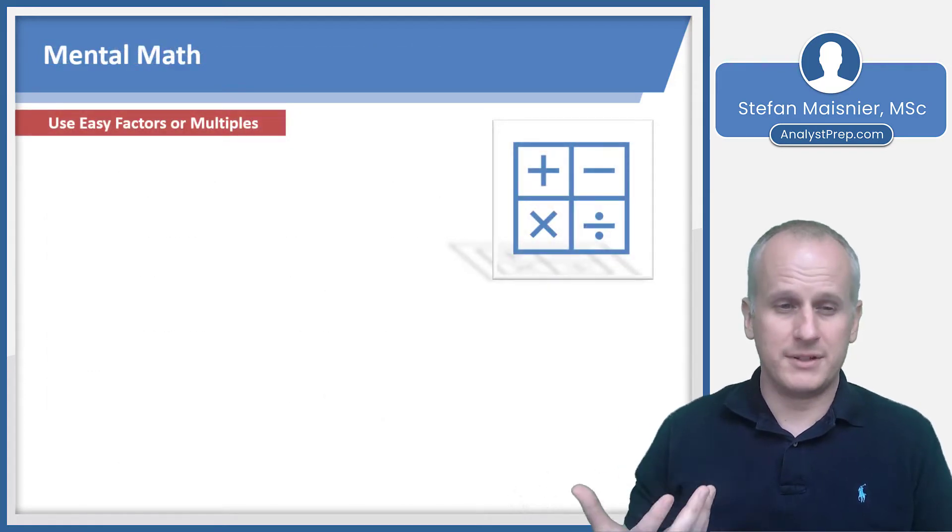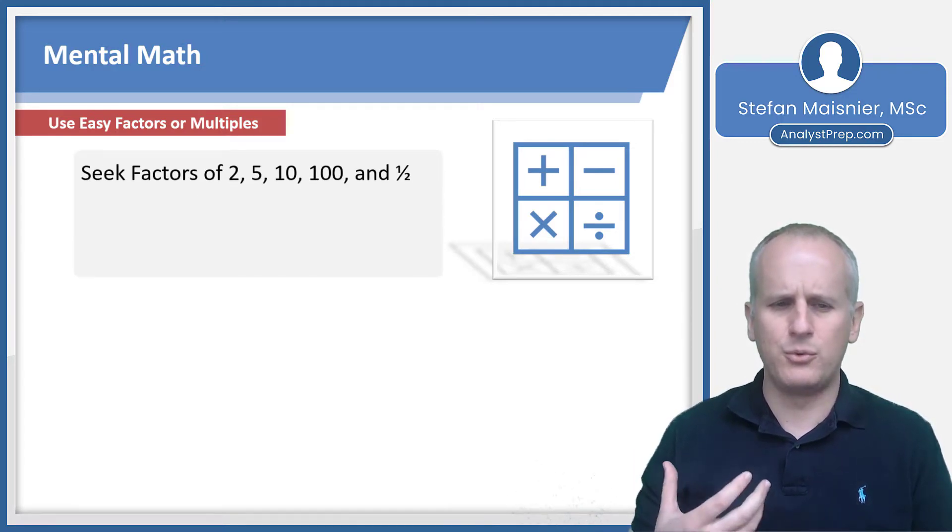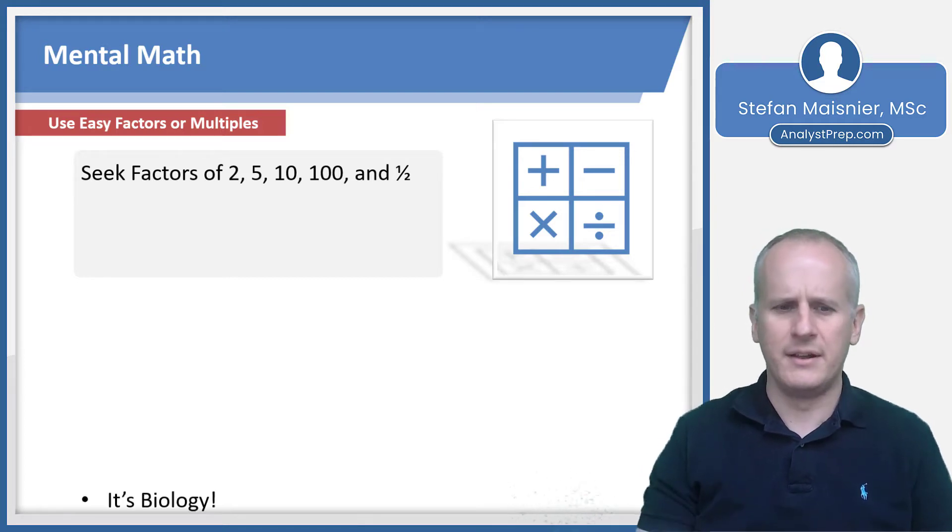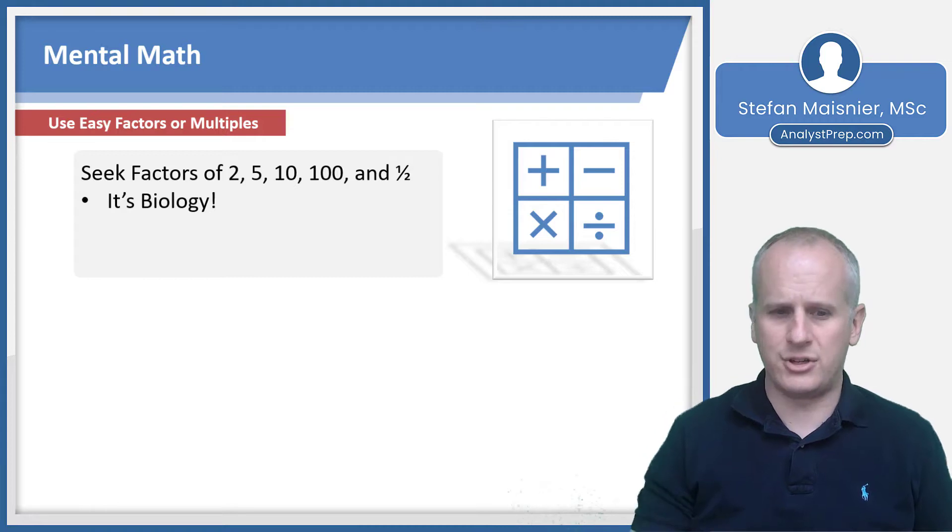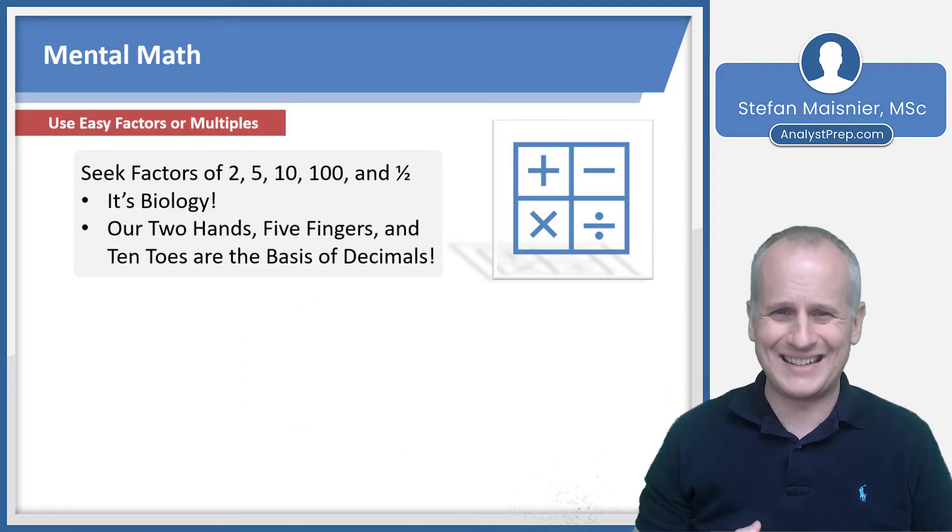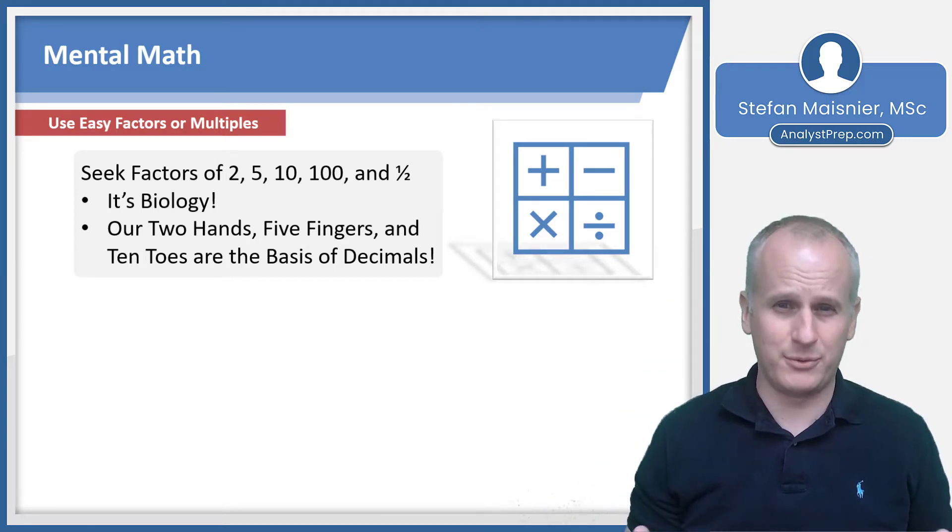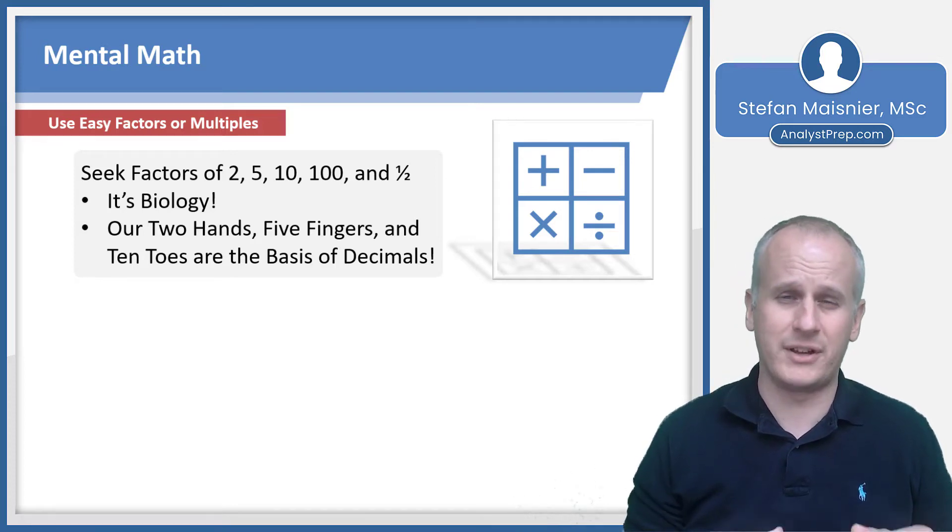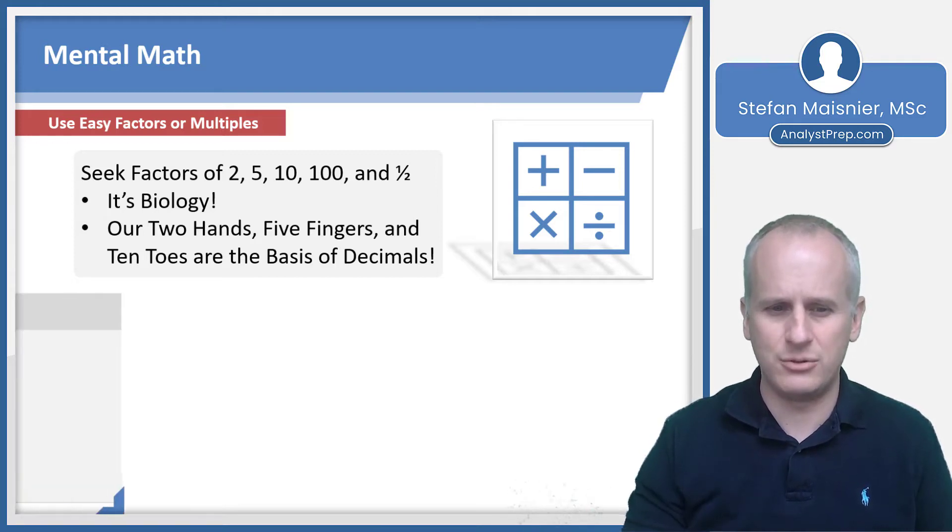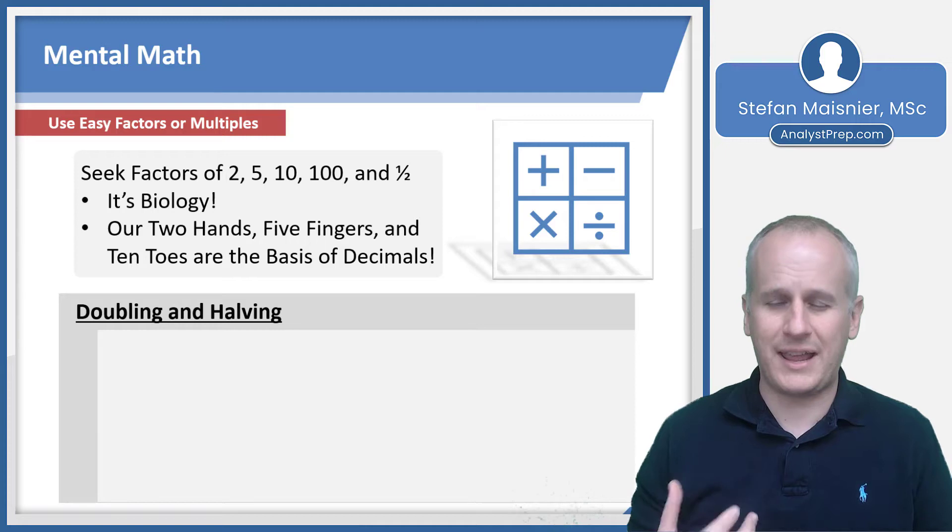The way that humans calculate math is by using what are considered easy factors or multiples. You want to seek factors of 2, 5, 10, 100 and ½. The reason for this is it's biology. We have 2 hands, 5 fingers, and 10 toes, and those are the basis of our decimal system. If my hand didn't have 5 fingers and instead everyone's hand had, say, 7 or 8 fingers, we'd be working off of a completely different math system. We want to rely on what is intuitive for manual calculation.